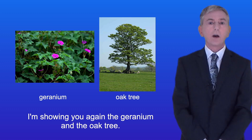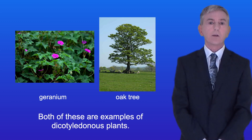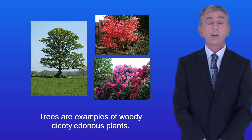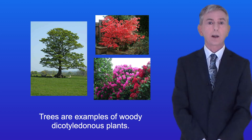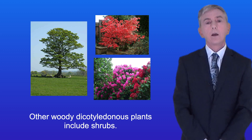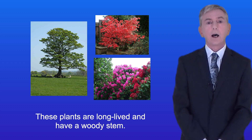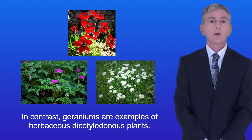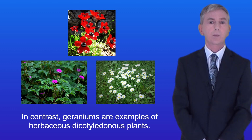I'm showing you again the geranium and the oak tree. Both of these are examples of dicotyledonous plants. Now trees are examples of woody dicotyledonous plants. Other woody dicotyledonous plants include shrubs. These plants are long-lived and have a woody stem.